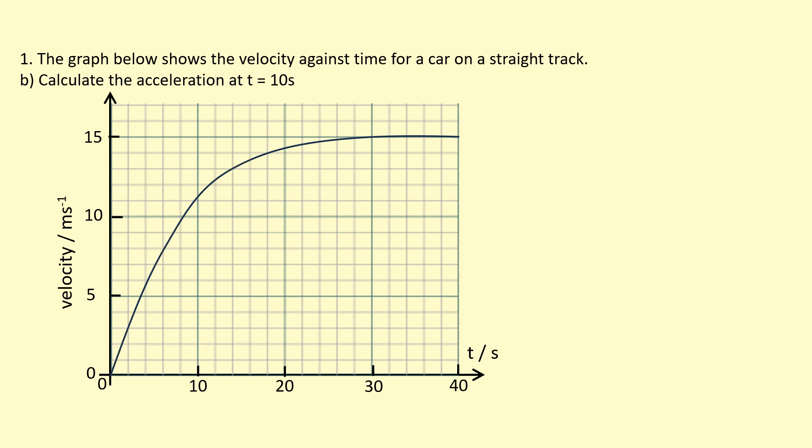Part B of the question, we're asked to calculate the acceleration at time t equals 10 seconds. Again, we're going to use the fact that the gradient of a velocity time graph is equal to acceleration. Unfortunately, this is where I see some students make a mistake, which is they just read off the value at 10 seconds and then divide, for example, in this case, 11 meters per second by 10 seconds to get the acceleration. This is incorrect, because what this is doing is figuring out the average acceleration from 0 to 10 seconds. That's not what the question is asking for, it's asking for the acceleration at t equals 10 seconds.